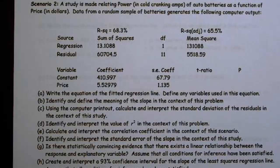Okay, this is your stat set, Mr. Spence, looking at scenario two for a quiz. Scenario two was based on a regression problem. A study is made relating power in cold cranking amps of auto batteries as a function of price in dollars. Data from a random sample of batteries generates the following.